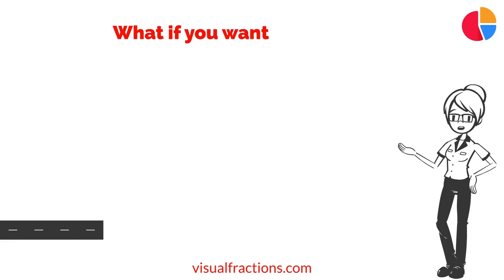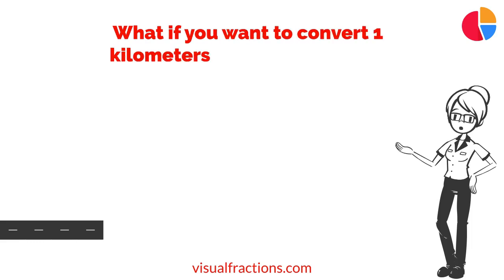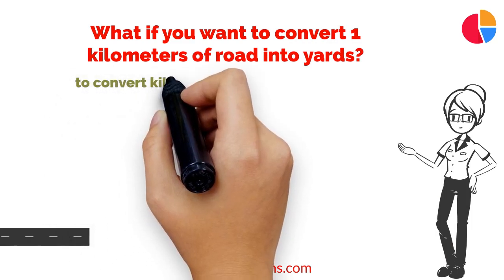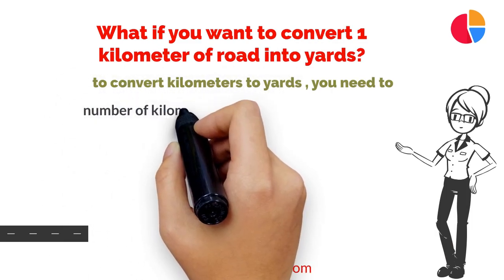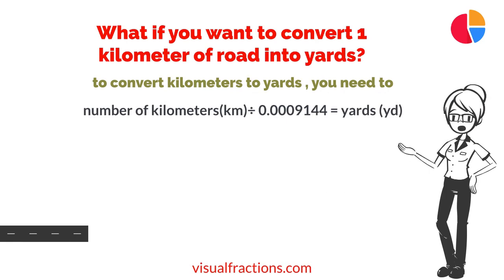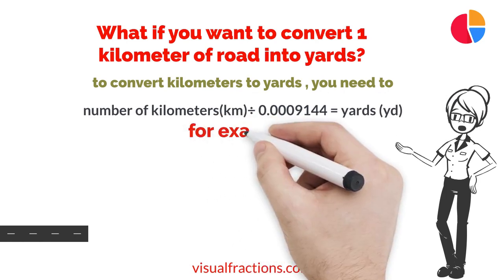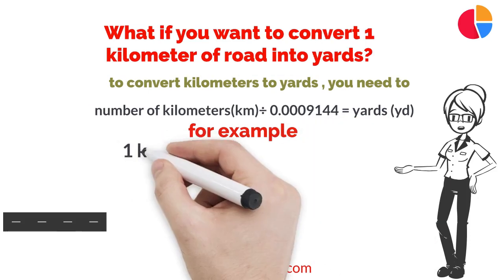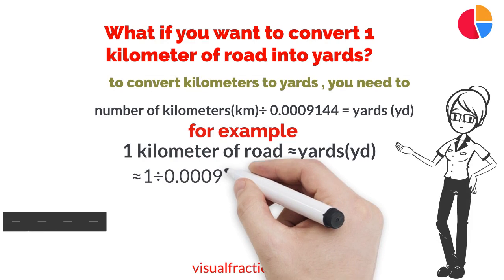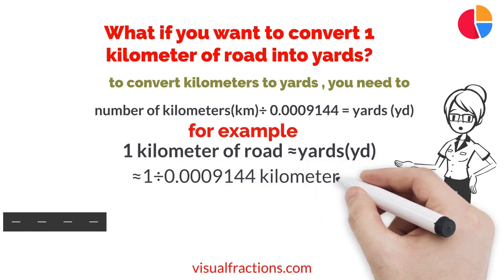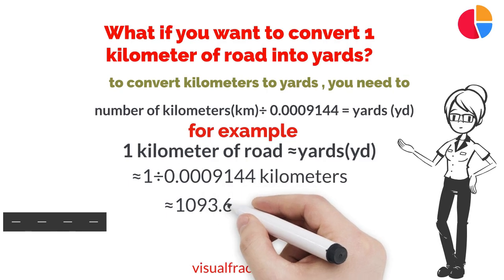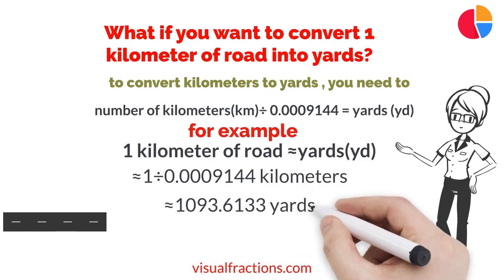But what if you want to convert 1 kilometer of road into yards? No worries, it's just as easy. To convert kilometers to yards, you need to divide the number of kilometers by the conversion factor of 0.0009144. Let's walk through an example: we start by dividing 1 by 0.0009144, which gives us approximately 1093.6133 yards.